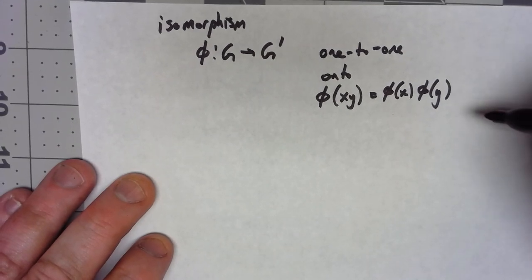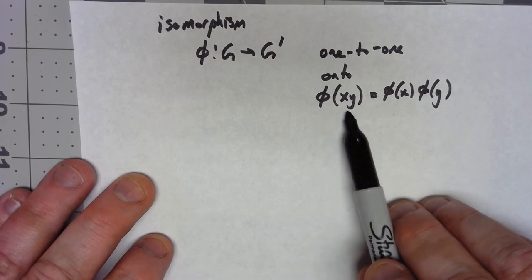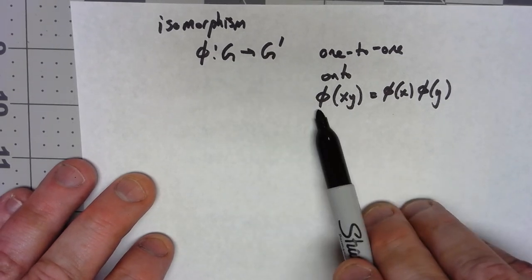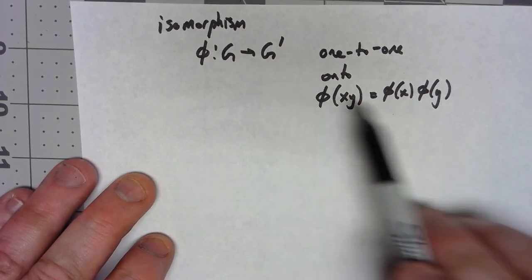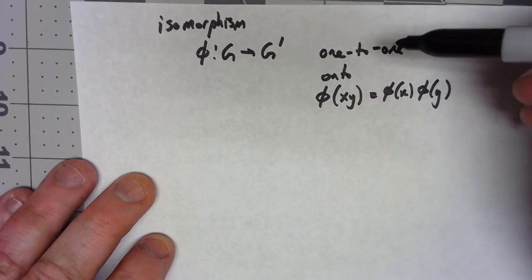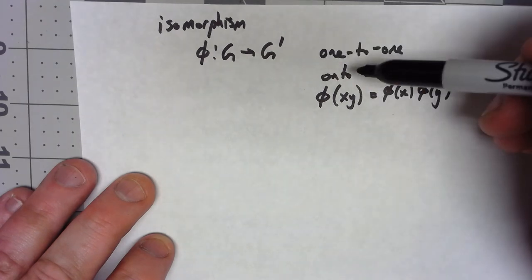This is called preserving the group operation because it sort of means that it doesn't matter whether we do the group operation in G before we do the function, or we do the operation in G prime after we do the function. That's an isomorphism.